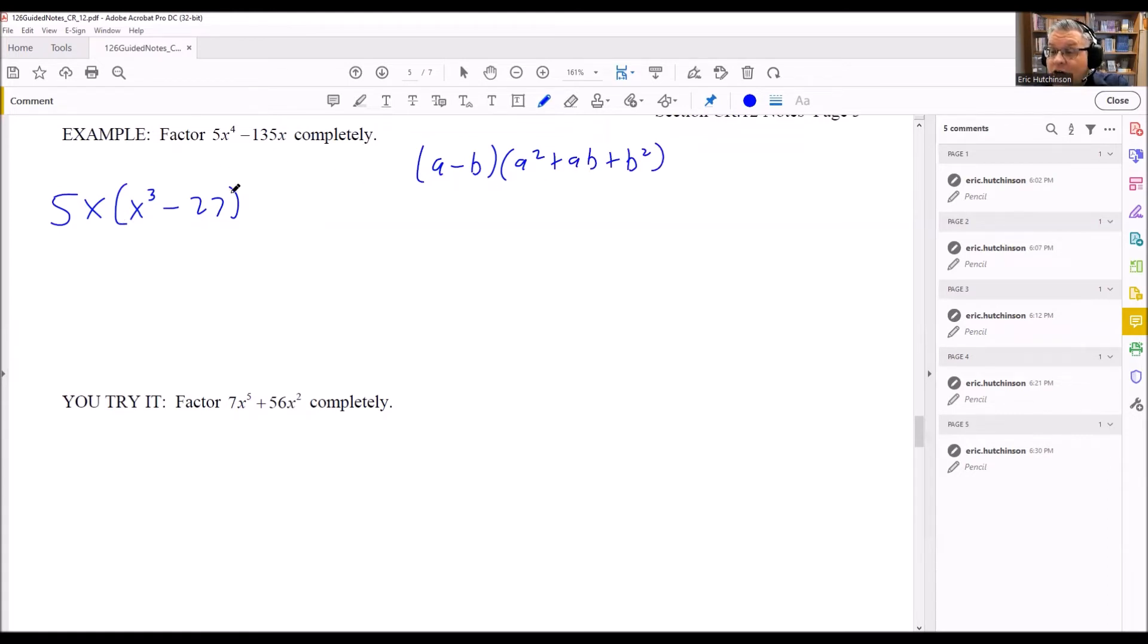So we're going to apply that now. Now in this case, the 27 can be written as 3 cubed. So because of that, we can write it as x quantity cubed minus 3 quantity cubed. So now I know what my a and b are going to be: a is x, and b is going to be 3.